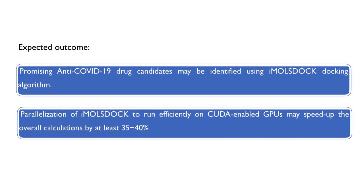The first expected outcome is that promising anti-COVID-19 drugs will be identified using the IMALS DOG docking algorithm. The second outcome is that by parallelizing IMALS DOG to run efficiently on CUDA-enabled GPUs, we can speed up the overall calculations by at least 35 to 40 percent.